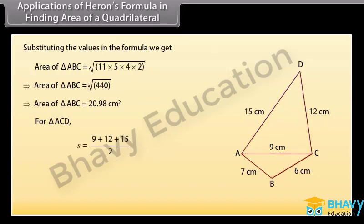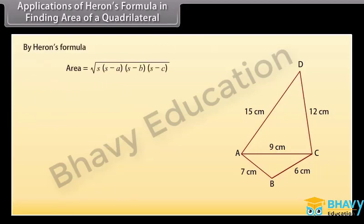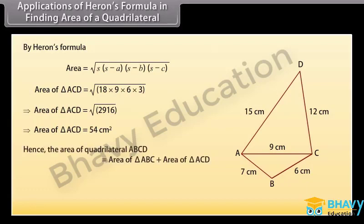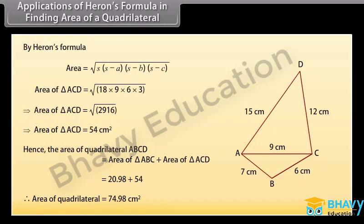For triangle ACD: S = (9 + 12 + 15) / 2 = 18 cm. By Heron's formula, area of triangle ACD = √(18 × 9 × 6 × 3) = 54 cm². Hence, the area of quadrilateral ABCD = area of triangle ABC + area of triangle ACD = 20.98 + 54. Therefore, area of quadrilateral ABCD = 74.98 cm².